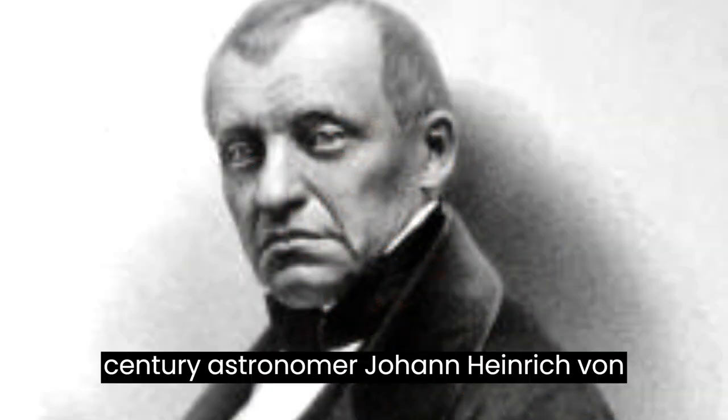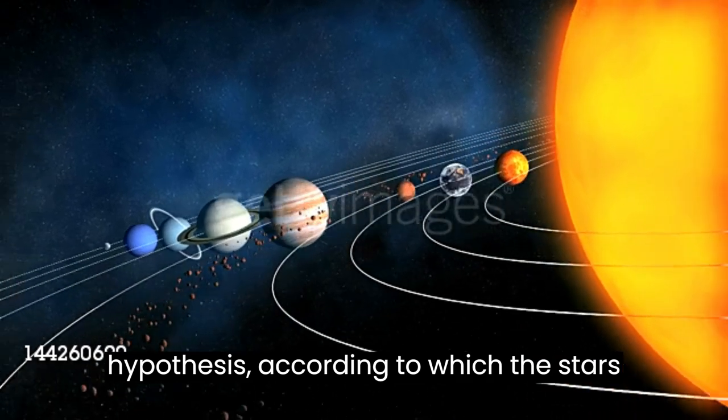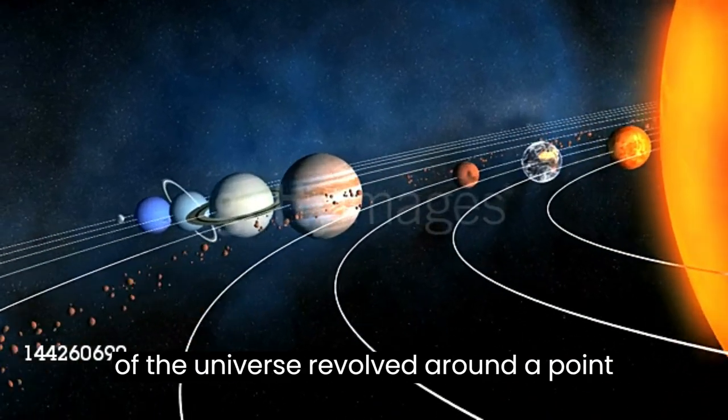The 19th century astronomer Johann Heinrich von Madler proposed the central sun hypothesis, according to which the stars of the universe revolved around a point in the Pleiades.